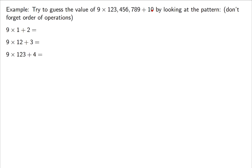9 times 1 is 9; 9 plus 2 is 11. 9 times 12 is 108; 108 plus 3 is 111. 9 times 123 is 1,107; plus 4 is 1,111. So the pattern is obvious — you get all ones, and the number of ones is the number that you're adding. That's the pattern.